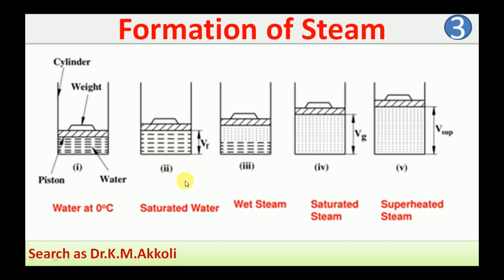At the second stage the water is saturated. If you heat it further, partially the water starts converting into steam — here we can see the steam is partially converted and remaining water is still there. That is called wet steam; it is a mixture of water and vapor.